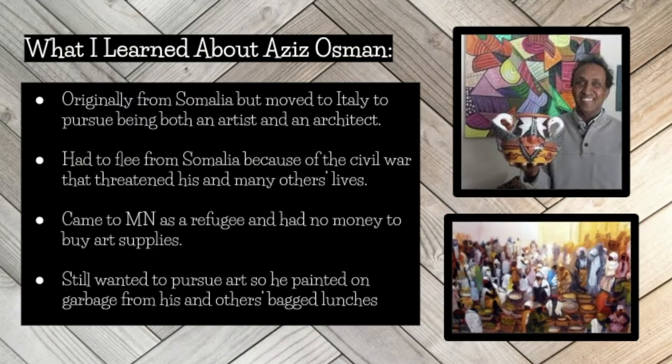Some really interesting things I learned about Mr. Osman are that he was originally from Somalia, but when he was about our age he moved to Italy to pursue being both an artist and an architect. He then returned home to Somalia because he wanted to connect with his roots, but months after moving home a civil war broke out and he had to flee the country. He actually ended up escaping death by firing squad, which is just crazy to think about, and this is ultimately how he ended up in the Twin Cities. He now resides in Columbia Heights.